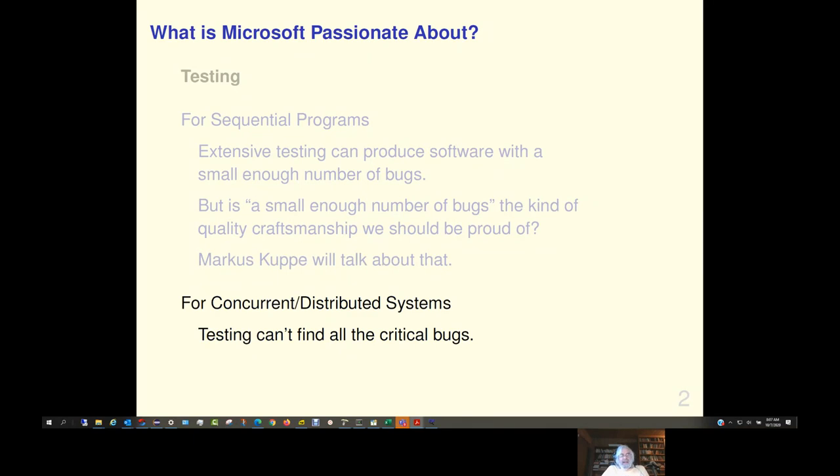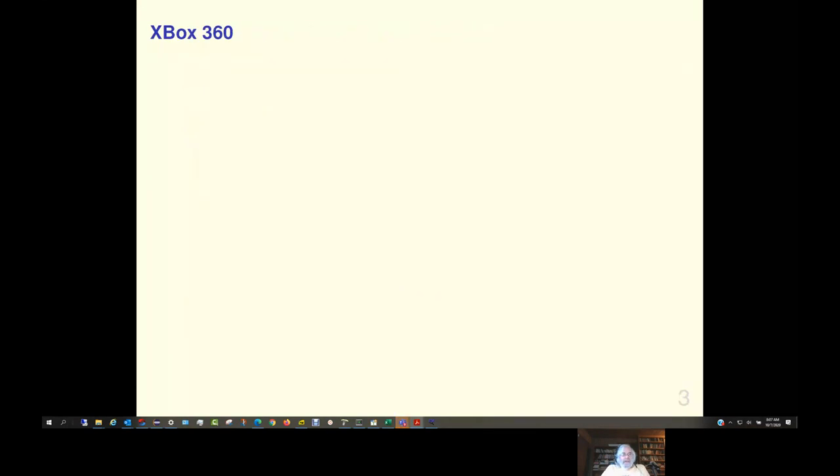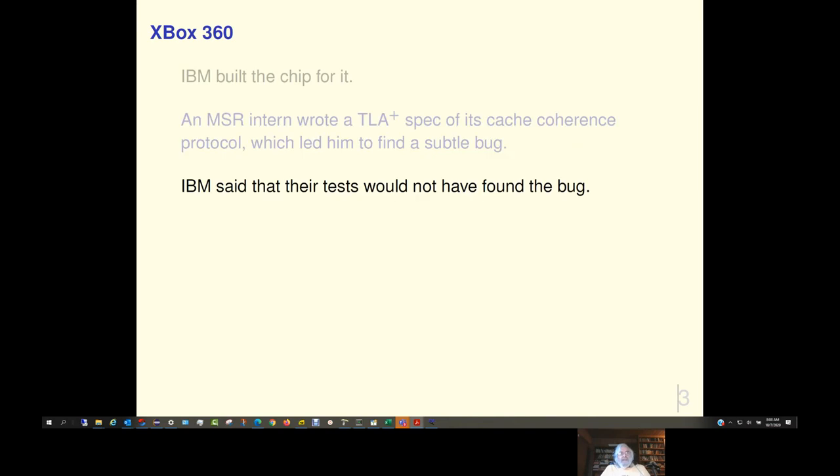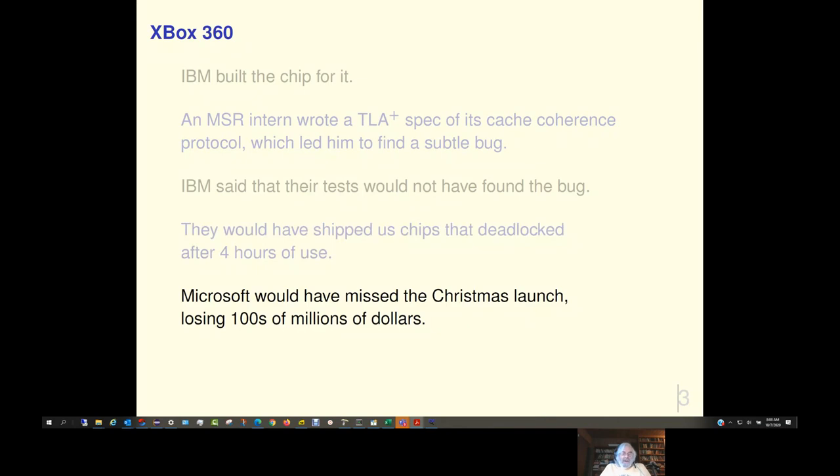For concurrent or distributed systems, testing simply can't find all the critical bugs. An example, the Xbox 360, that was quite a few years ago. Now, IBM built the chip for the Xbox and a Microsoft research intern wrote a TLA Plus spec of its cache coherence protocol, which led him to find a subtle bug. IBM said that their tests would not have found that bug, and they would have shipped us chips that deadlocked after four hours of use. Microsoft would probably have missed the Christmas launch because of that, losing hundreds of millions of dollars.